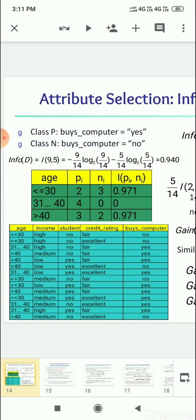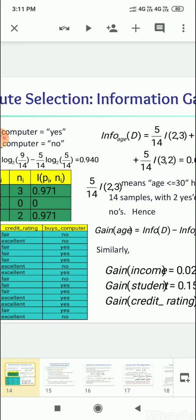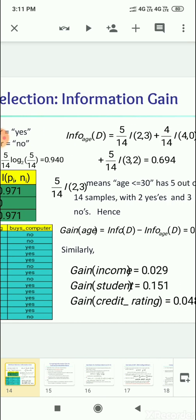So total entropy can be found for buys computer. The info of D is equal to minus 9 by 14 log 9 by 14 to the base 2, minus 5 by 14 log 5 by 14 to the base 2. You get 0.940. Then for information for attribute age.